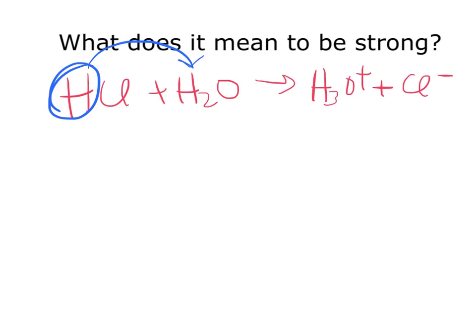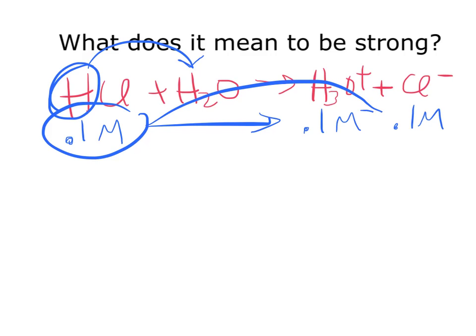that is, if the concentration of HCl was 0.1 molar, that means that H3O+ would also be 0.1 molar, and Cl- would also be 0.1 molar. Because 100% of this 0.1 turns into H3O+ and Cl-.